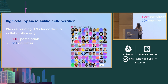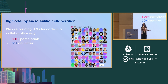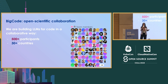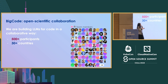So why did we start BigCode? We wanted to train a model and we always knew we were going to open source it. We had two options: either do it in-house and release the model to the community, or start an open collaboration so that everyone can follow the progress from the beginning — from when we start curating the data to when we train the model to when we release it. That's what BigCode is. It is a collaboration between Hugging Face and ServiceNow, which is very open, meaning that anyone can join. We have more than 500 participants from over 30 countries collaborating to train these models.